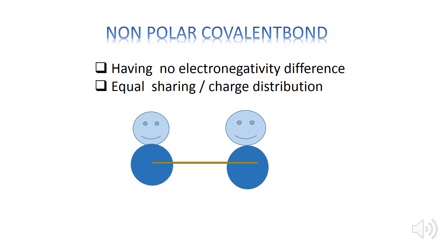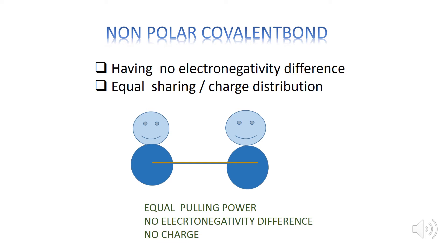Now let's talk about non-polar covalent bonds. Atoms having no electronegativity difference cause electrons to be equally shared between the two atoms. They have the same pulling power, so no pole formation occurs and equal sharing of electrons takes place between the two atoms.